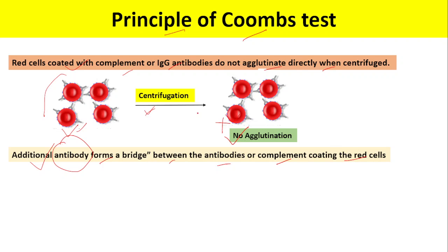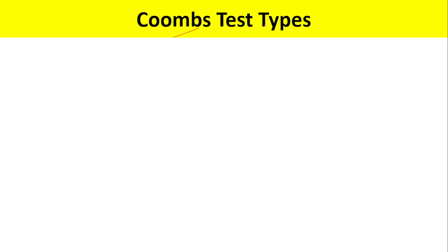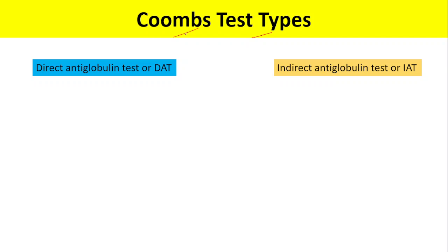The Coombs reagent is an anti-human antibody. As shown here, when we add the Coombs reagent, it forms a bridge between the antibodies coating the red blood cells, and that results in agglutination of the red blood cells.